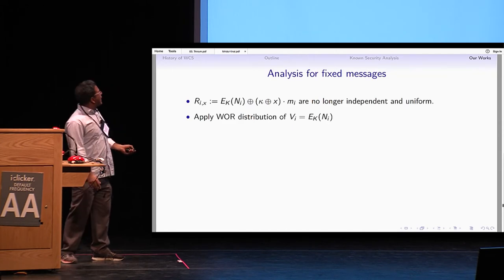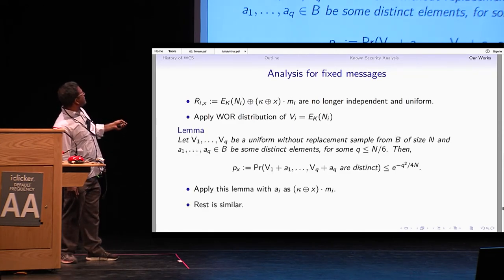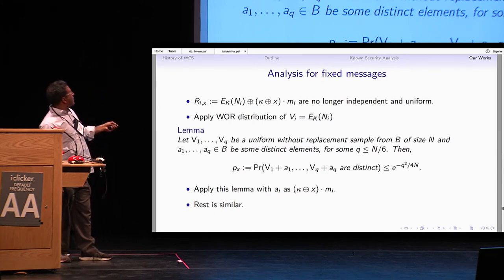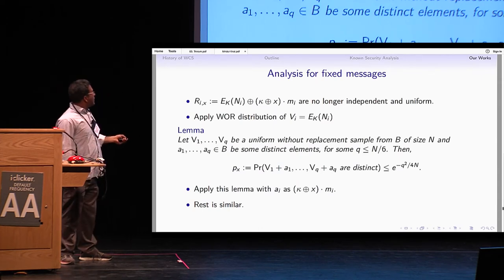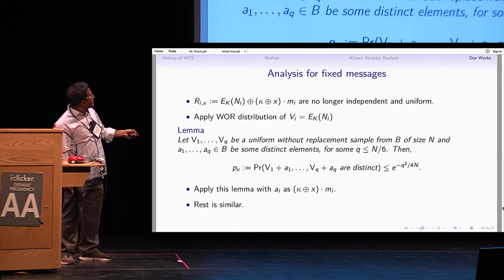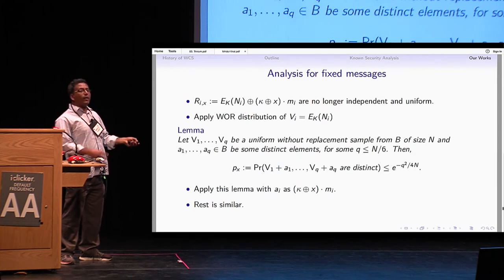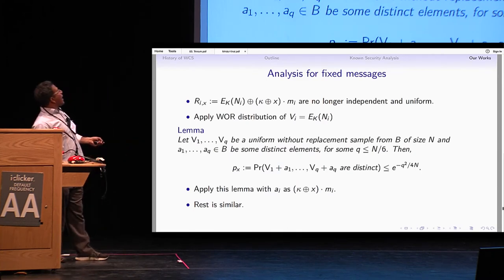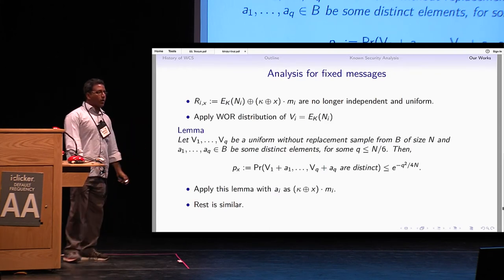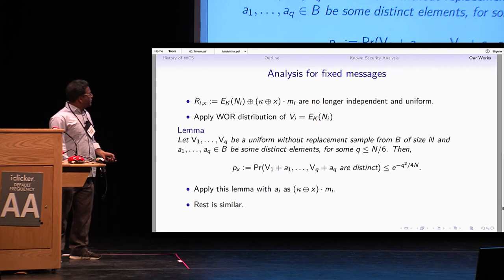For the fixed message case, we don't have randomness in M_i, but we still have E_K(N_i), which can be modeled as without-replacement sampling since the model uses random permutations. We need a technical lemma — details are in the paper — to show that V_1 + A_1, V_2 + A_2, … are all distinct with a similar bound on distinctness probability, where A_i = K + x · M_i.